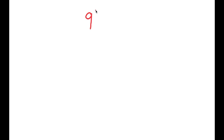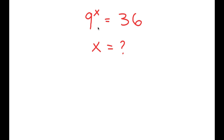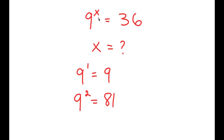In this equation, I'm going to be solving 9 to the power of x equals 36. The variable is x, which is what I'm solving for. We can already tell that x is not going to be a whole number, because 9 to the power of 1 is 9 and 9 to the power of 2 is 81. So x is going to be somewhere between 1 and 2.